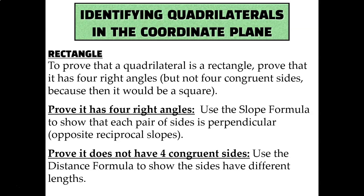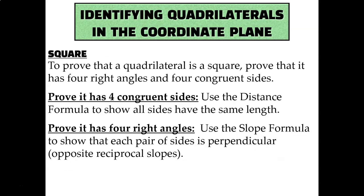Which of course means that a square is both of those put together. You have to show that it has four congruent sides using the distance formula, and show that it has four right angles by showing that each pair of sides is perpendicular.